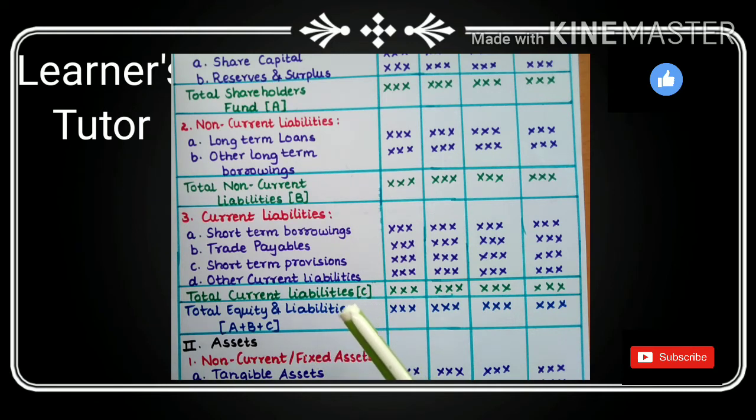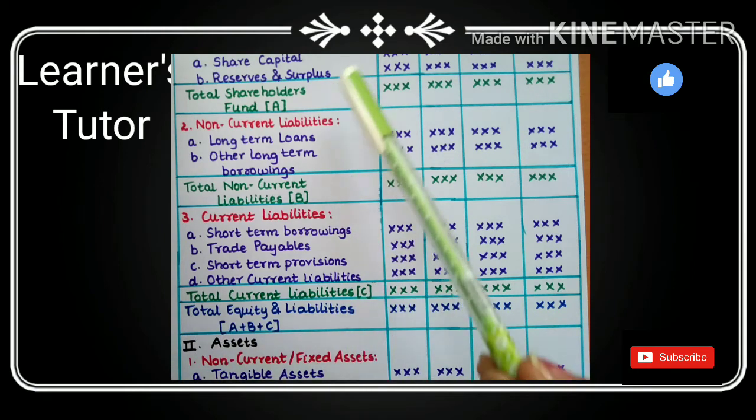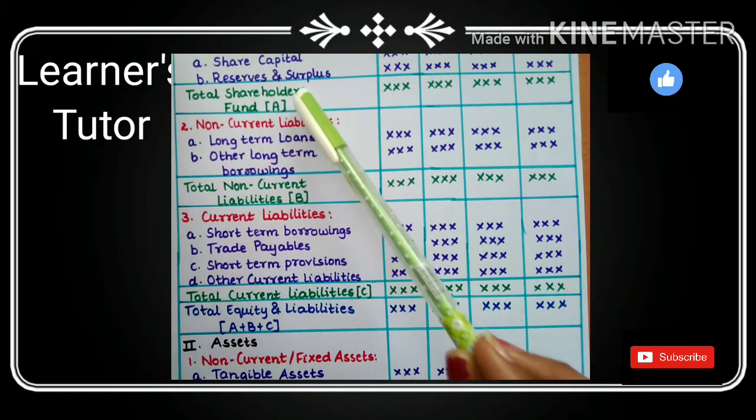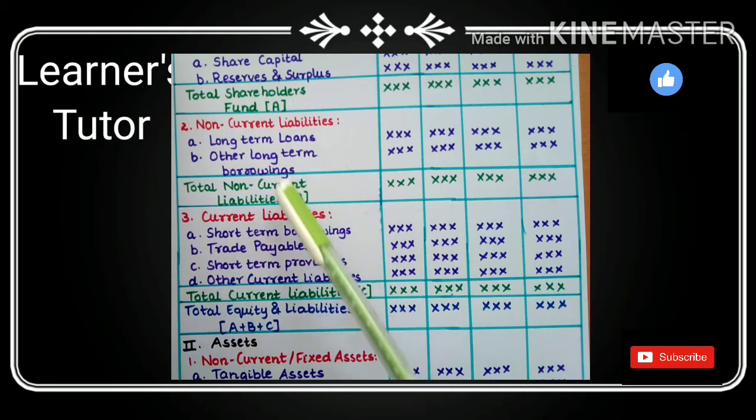Next, total current liabilities is C. Total equity and liabilities is nothing but A plus B plus C. That means A is total shareholders fund, total non-current liabilities is B, total current liabilities is C. So A plus B plus C is your total equity and liabilities. Now let's understand assets. Under assets we have non-current or fixed assets and current assets.